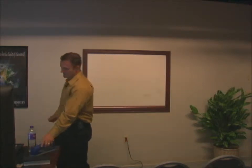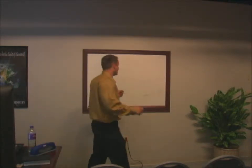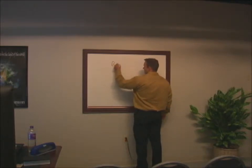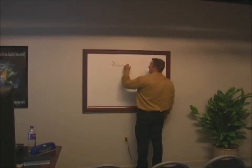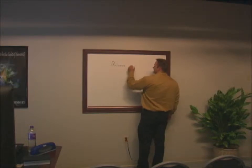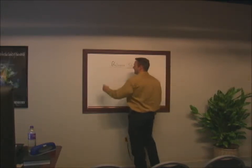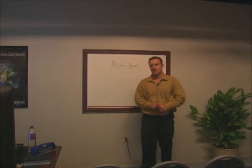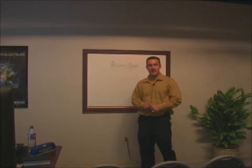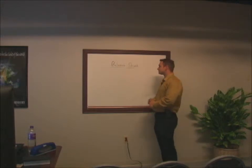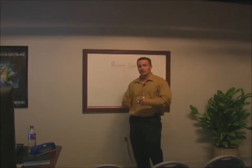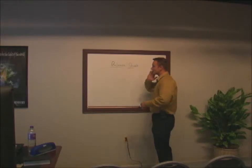One of the keys to asset valuation is you would want to look at the balance sheet. The balance sheet is one of the key accounting forms — balance sheet, income statement, cash flow analysis, and statement of retained earnings are your four core accounting forms.